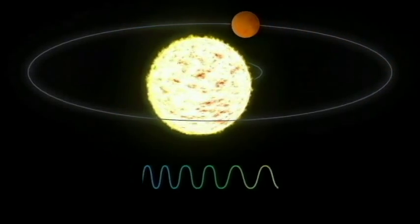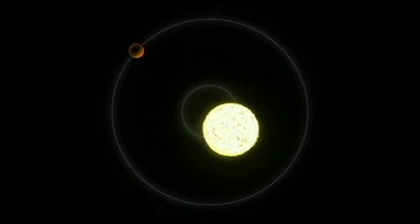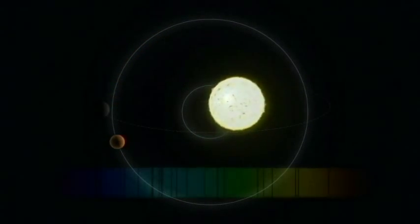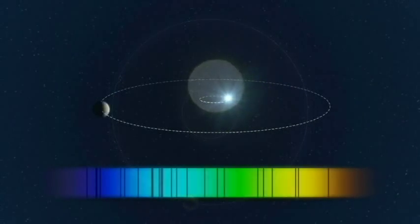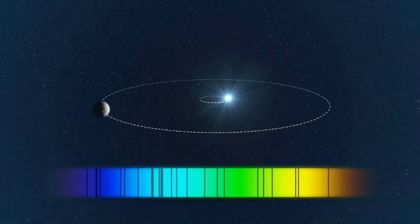Now how do astronomers detect this wobble? Well, they use something called a spectrograph and powerful telescopes to examine the light coming from distant stars. A spectrograph is like a prism. It splits the light from the star into its component colors, producing a spectrum.